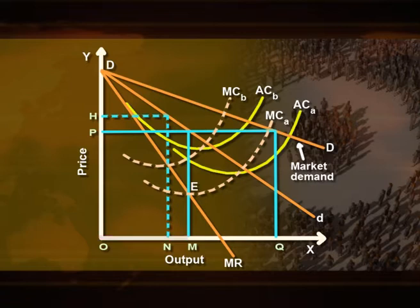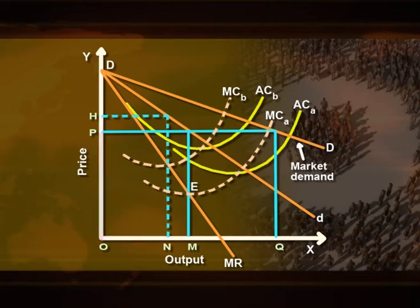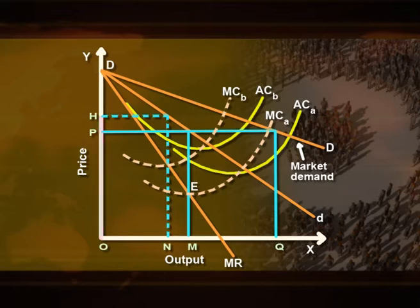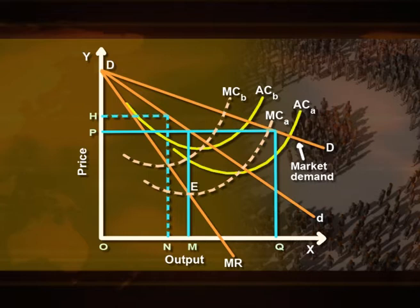Firm A will maximize profits by setting output OM and price OP, since at output OM its marginal cost equals marginal revenue MR. Firm B will maximize profits when it fixes price OH and sells output ON. The profit-maximizing price OP of firm A is lower than price OH of firm B. Since firm A and firm B produce homogeneous products, they cannot charge two different prices. Therefore, firm A will set the price and firm B will follow it, also charging price OP and producing quantity OM. Thus, both firms will charge the same price OP and sell the same quantity OM.